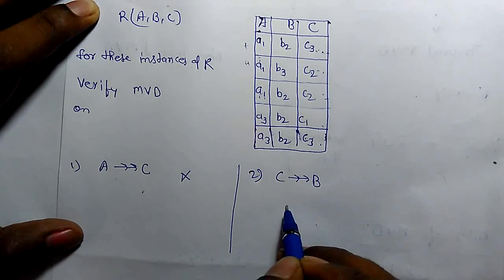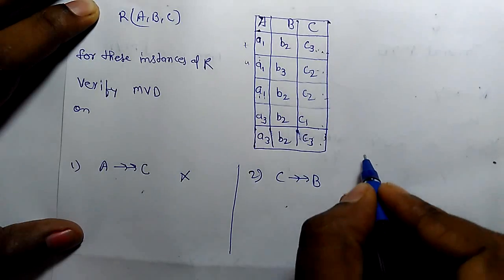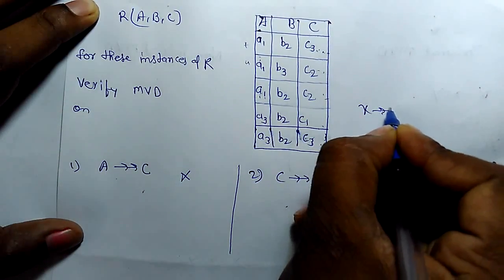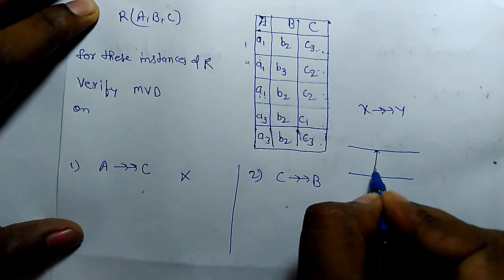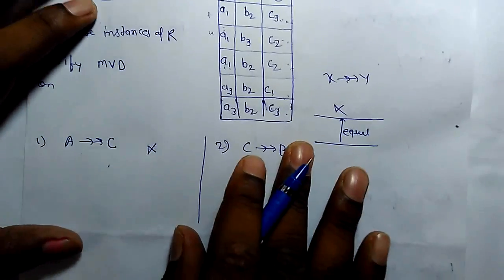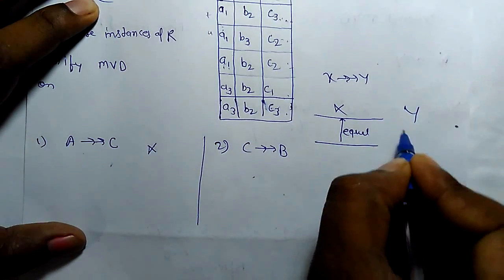So it is the multivalued dependency. It means if X multivalued determines Y, it has equal value of X and there is Y.